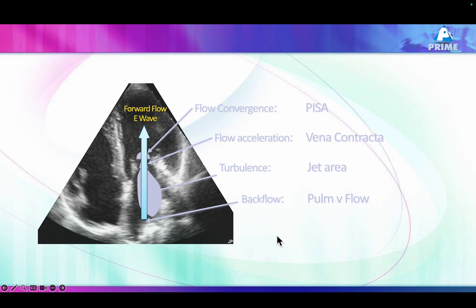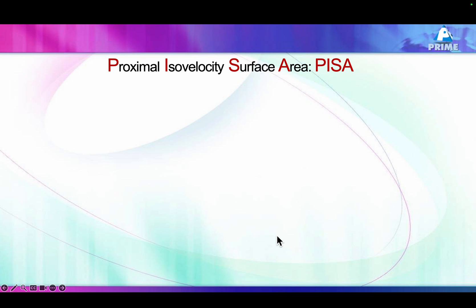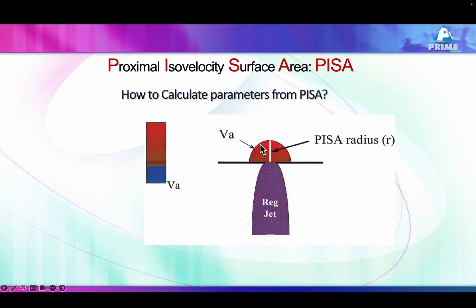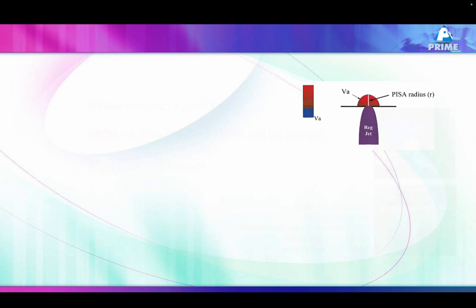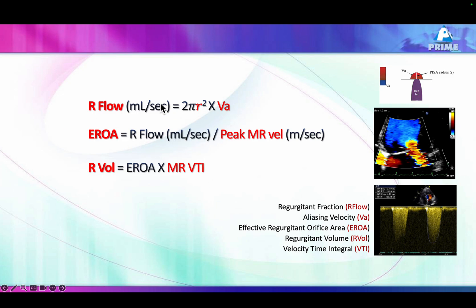Step by step: for PISA, you need three things — the radius, the velocity at the Nyquist limit at which this radius appeared, and the peak velocity of the regurgitation jet on continuous wave Doppler. The regurgitation flow equals 2π r² multiplied by the velocity at the Nyquist limit. Applying this with the peak velocity of the mitral valve gives you the effective regurgitation orifice area (ERO).